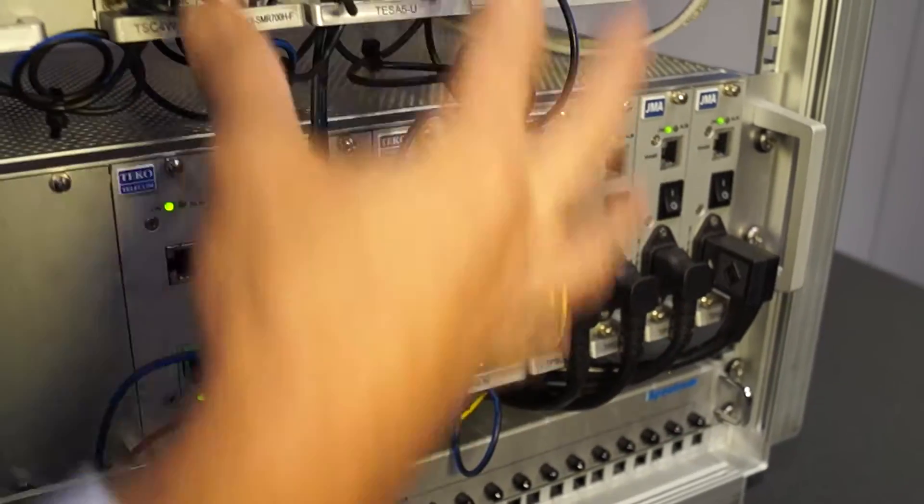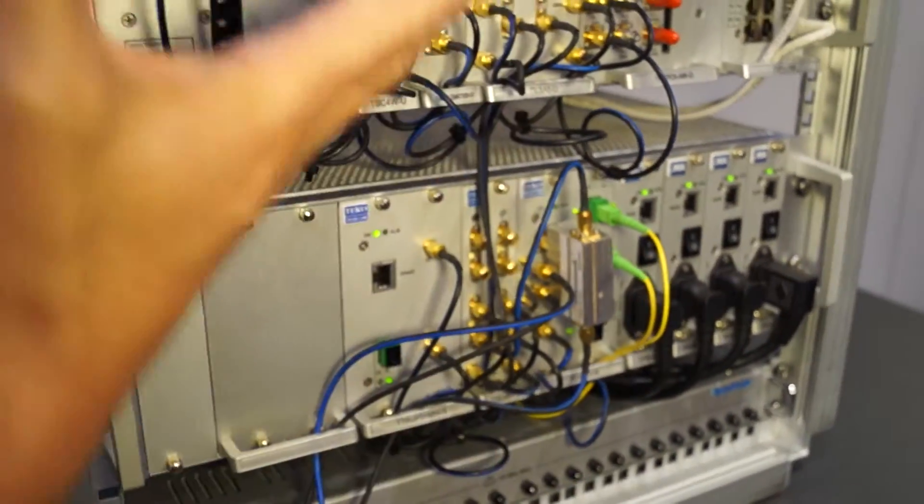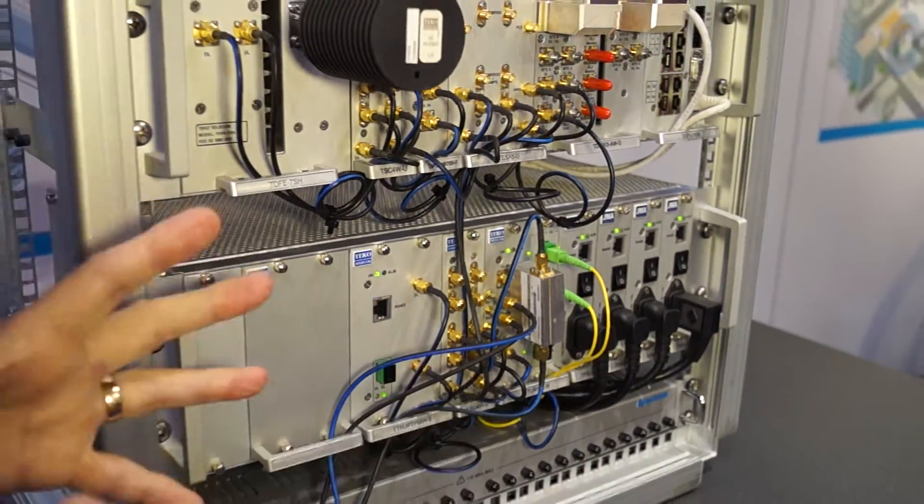Several different bands and several different operators can feed through a common system out to the different radio heads. So it's a combination of low power, high power bands. So you can do indoor and outdoor scenarios inside of a DAS deployment, giving the operators and the neutral host providers the ultimate in flexibility.